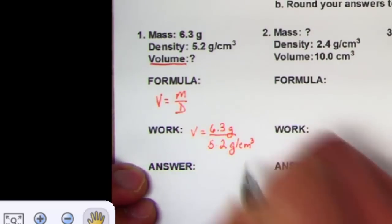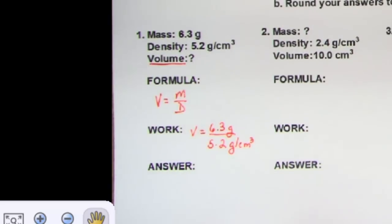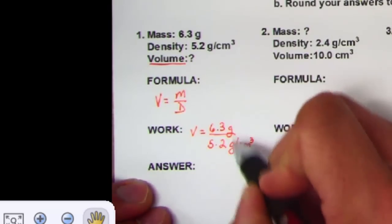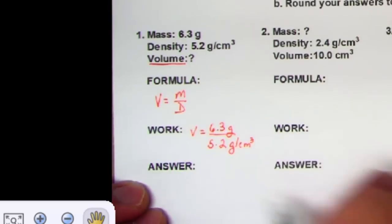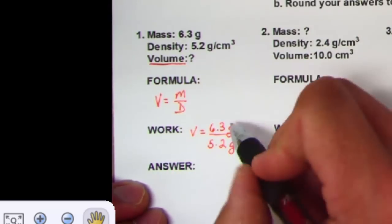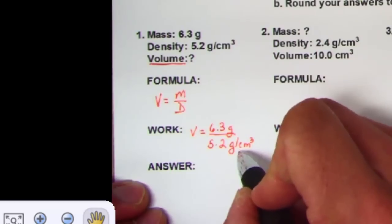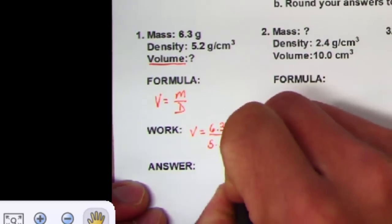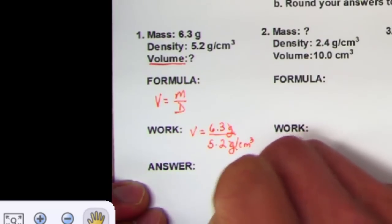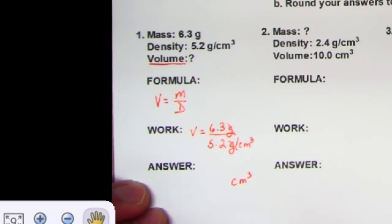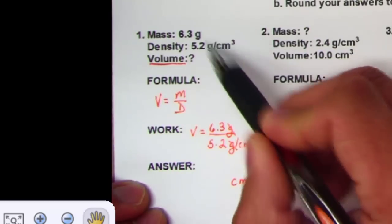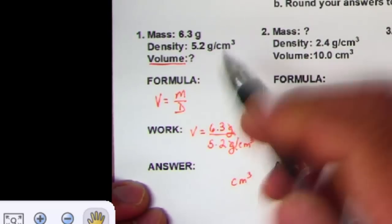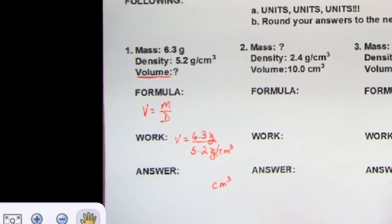Volume equals 6.3 grams divided by 5.2 grams per cubic centimeter. Once you set up your problem with units filled in, you can see the grams cancel out, leaving cubic centimeters as your unit. You didn't have to memorize the unit — just cancel out like units and whatever's left is your answer unit. Take your calculator, type in 6.3 divided by 5.2, and hit equals.